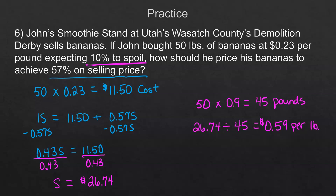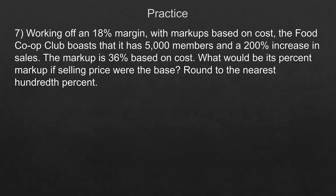That spoilage part makes it a different kind of problem. Now for the next one, we're going to use a formula. Working with an 18% margin, the food co-op club has 5,000 members and a 200% increase in sales — but we don't need those details for this calculation. It's a 36% markup based on cost. What would be its percent markup if selling price were the base?